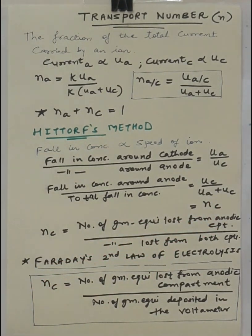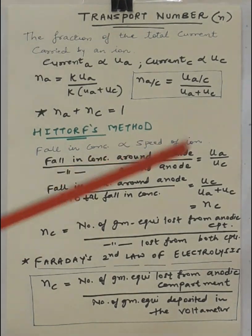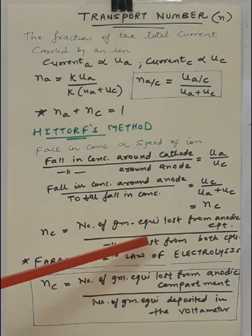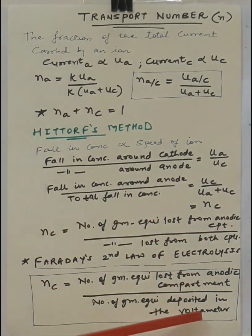So, what we can do is within the experimental setup, we can add in series the voltameter. Now, this voltameter will be of different types. Suppose you are studying silver nitrate solution and you want to find out the number of gram equivalents with reference to the silver ions, your voltameter will be a silver voltameter. If you are taking copper sulfate as an electrolyte, then your voltameter will be a copper voltameter.